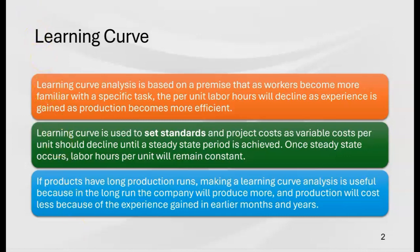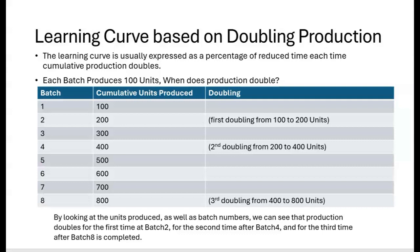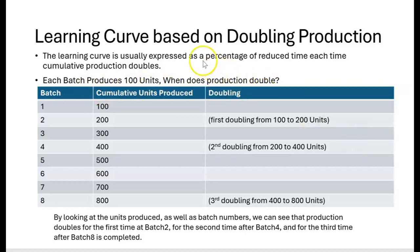So the longer the production run, the more beneficial the learning curve analysis. Now let's look at the basics. The learning curve is based on doubling production — it's usually expressed as a percentage of reduced time each time cumulative production doubles. In this example, each batch produces 100 units, so when does production double? The learning curve really kicks in when production doubles.